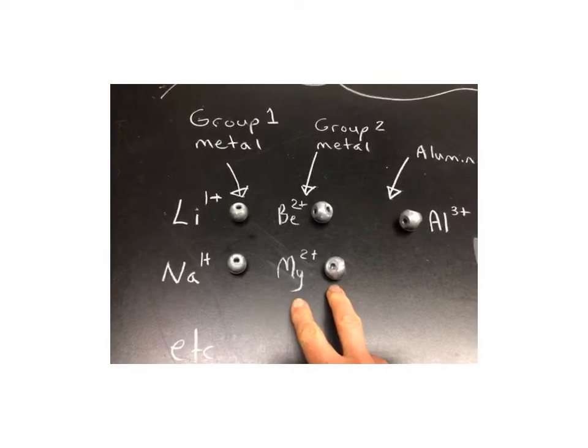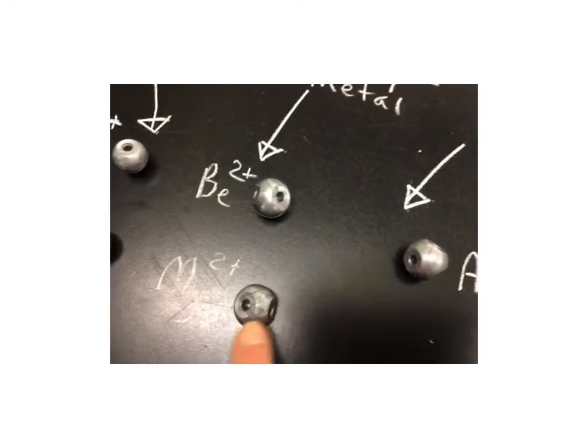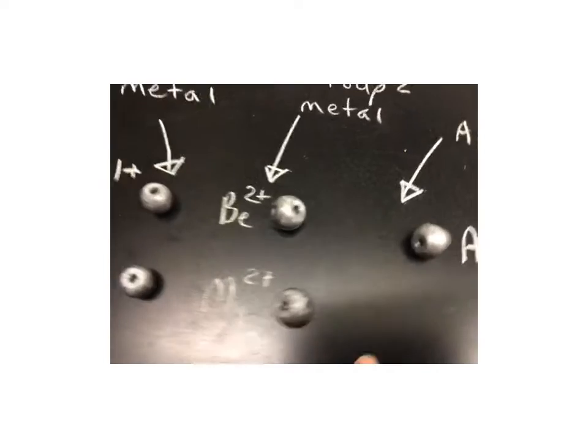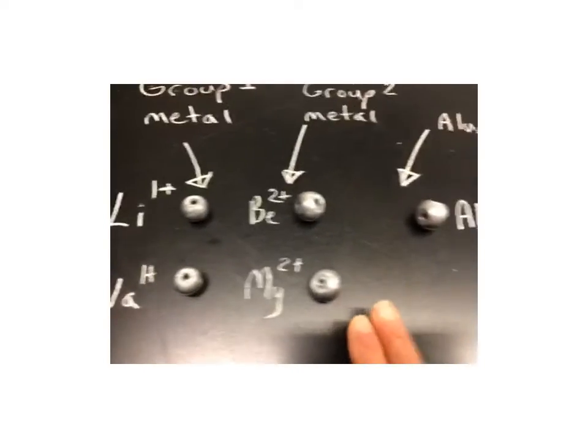Our group two metals have two holes, as you can see, one and two, representing the two electrons that they give away.